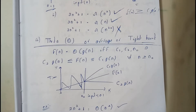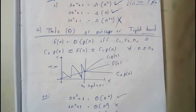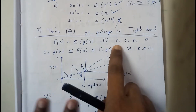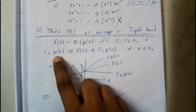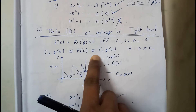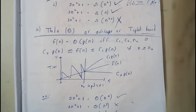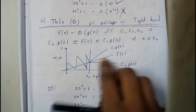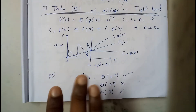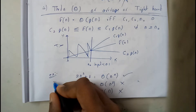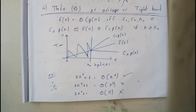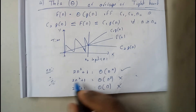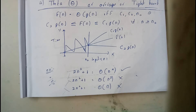Theta is the easiest — it is just the mixture of both Omega and Big O. f(n) = Θ(g(n)) if and only if c₁·g(n) ≤ f(n) ≤ c₂·g(n) for all n ≥ n₀. In the graph, f(n) will be in the middle, with c₂·g(n) above and c₁·g(n) below. Unlike the previous ones, for Theta it is compulsory that both bounds hold simultaneously — only then is the condition satisfied.